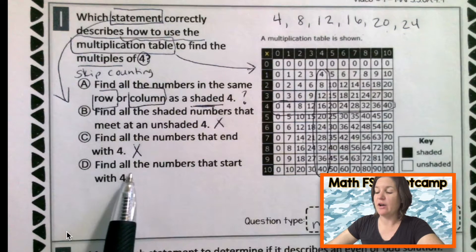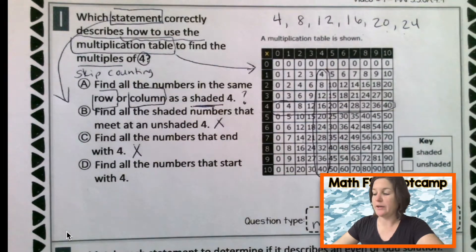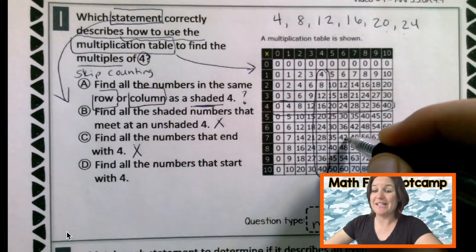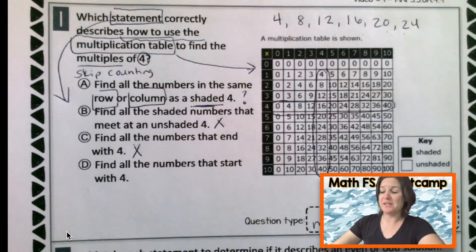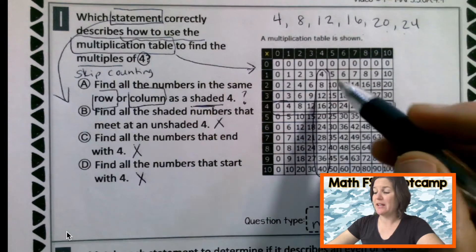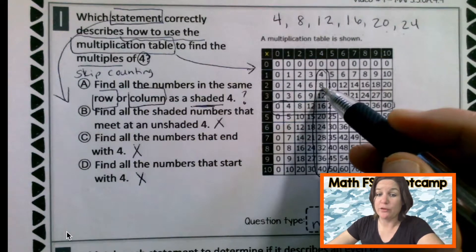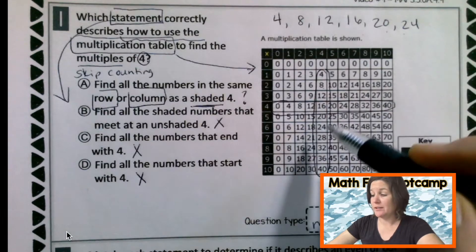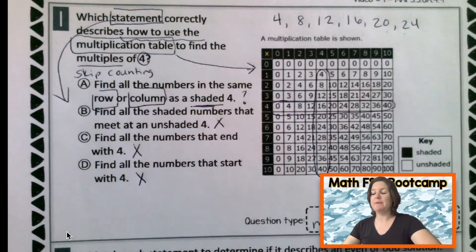D. Find all the numbers that start with 4. Okay. Like 42. 42 actually is not a multiple of 4. So it's not finding all the numbers that start with 4 either. Because there's other numbers like 8. 8 doesn't start with 4 and it's a multiple. 12 doesn't start with 4 and it's a multiple of 4. You know? So we can go ahead and eliminate that.